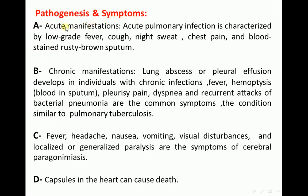Pathogenesis and symptoms — Acute manifestations include acute pulmonary infection characterized by low-grade fever, cough, night sweat, chest pain, and blood-stained rusty brown sputum. Chronic manifestations include lung abscess or pleural effusion developing in individuals with chronic infections. Fever, hemoptysis, pulmonary pain, dyspnea, and recurrent attacks of bacterial pneumonia are common symptoms. This condition is similar to pulmonary tuberculosis. Fever, headache, nausea, vomiting, visual disturbances, and localized or generalized paralysis are the main symptoms of cerebral paragonimiasis. Capsules in the heart can cause death.